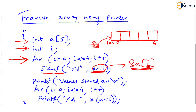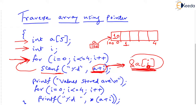Whatever value the user enters — maybe 10 — 10 will go at the address of a[i], that is the address of a[0] will store 10. Obviously when the loop repeats, i++ will make i equal to 1, so now we are ready to scan the first element. 'a plus i' in scanf is equivalent to '&a[i]', the address of the ith element. So whatever the user enters — maybe 20 — will go at a[i], and this goes on till i becomes 4.